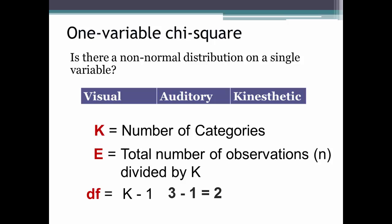If you had four categories — visual, auditory, kinesthetic, and, let's say, extrasensory — then degrees of freedom would be 3. Four categories minus 1 equals 3.